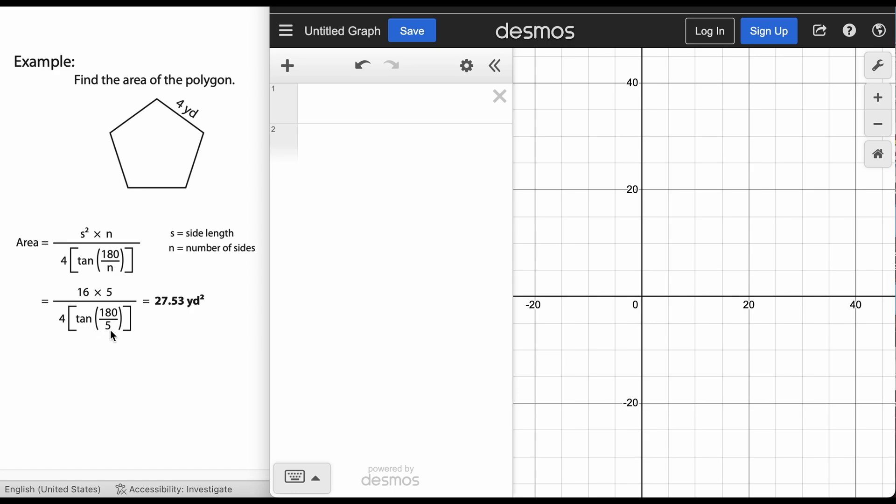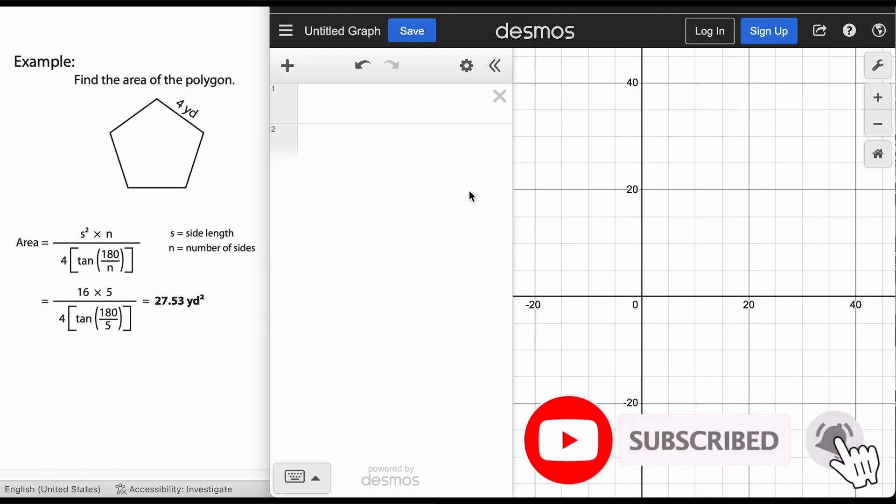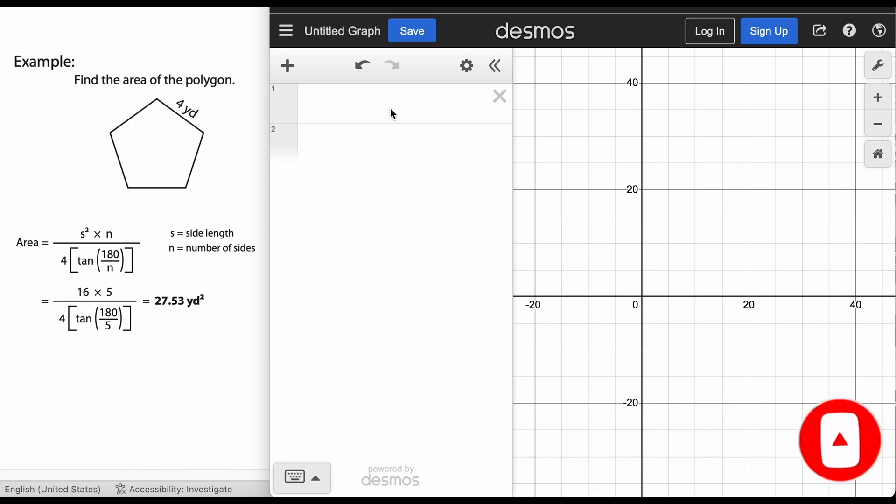Okay, when we do this we should get 27.53 rounded yards squared. So easiest way probably is going to come over here, just go ahead and use Desmos. We're not going to be concerned about the graphing portion of this, we're just going to use the calculator feature of Desmos.